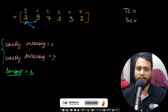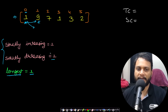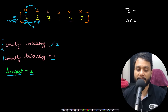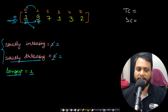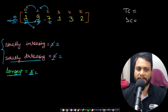We solve element by element, always starting from index 1 since the first item is already counted by default. For each element we check nums[i] against nums[i-1]. If nums[i] is greater than nums[i-1], it is strictly increasing so we increase the size of the strictly increasing subarray. Otherwise we reassign it to 1. We always track the longest found so far as the maximum of the current longest, strictly increasing, and strictly decreasing values.